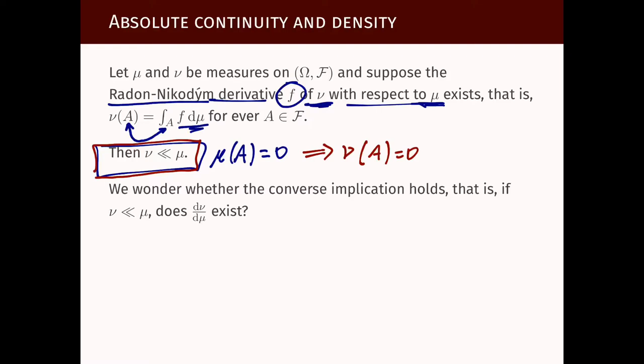Now the main point of this video lecture is to ask the opposite. If ν is absolutely continuous with respect to μ, does it imply that ν has a density? This will be the converse implication.